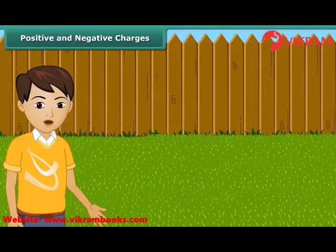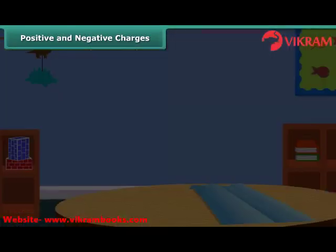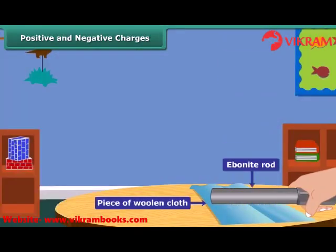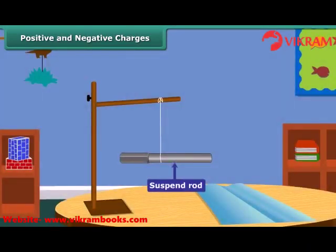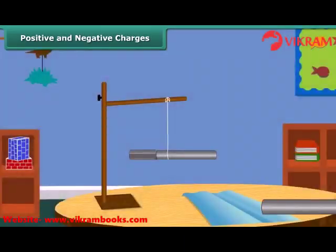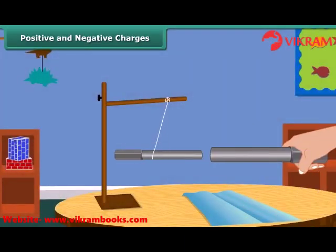Let us perform an activity to understand positive and negative charges. Take an ebonite rod and rub it with a piece of woolen cloth. Now suspend the rod by tying a thread through its middle. Charge another ebonite rod in the same way and bring it close to the suspended rod. What do you notice? The suspended rod moves away from the second one.